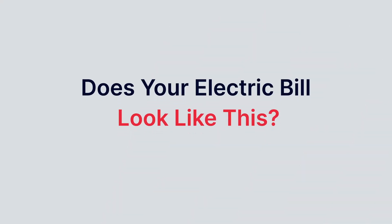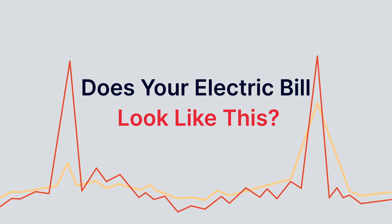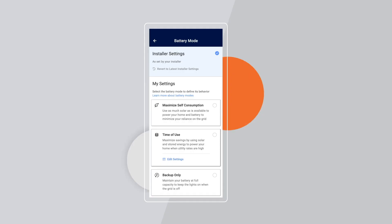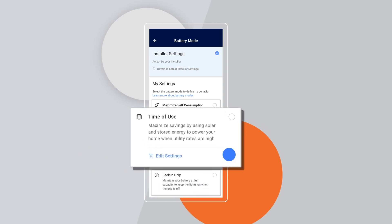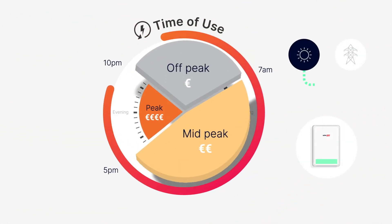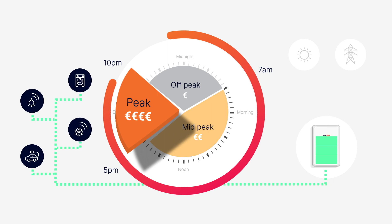Does your electric bill look like this? If you experience inconsistent utility rates, time of use mode is for you. Powered by SolarEdge smart technology, this mode helps you reduce your energy bills by automatically charging the battery from solar and/or grid when utility rates are at their lowest — just enough to provide power for peak hours consumption.